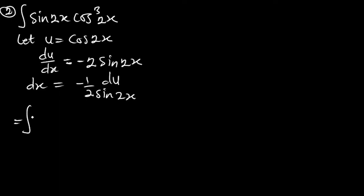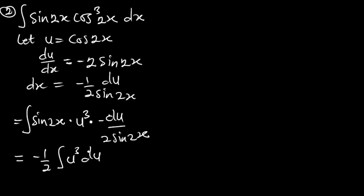Finally, integral: this sine 2x, cosine is now u, u cubed. There's a dx here. So dx is also now negative du over 2 sine 2x. So sine 2x can take care of sine 2x. And I'm going to get this negative half will come out. Integral u cubed du.